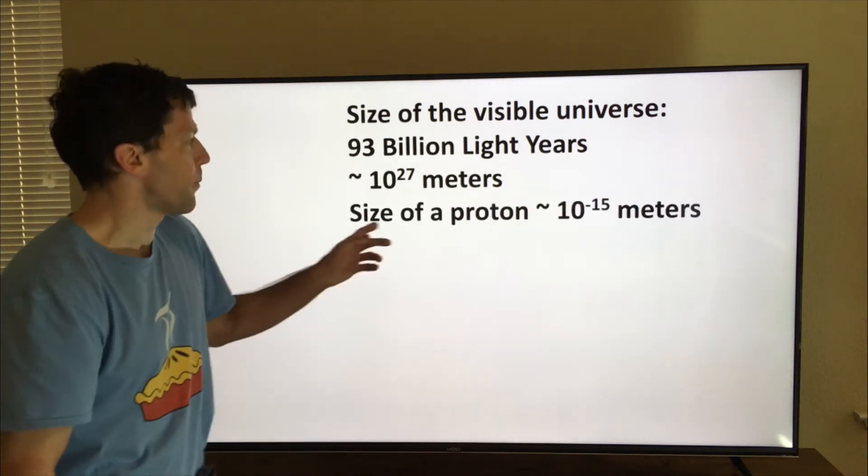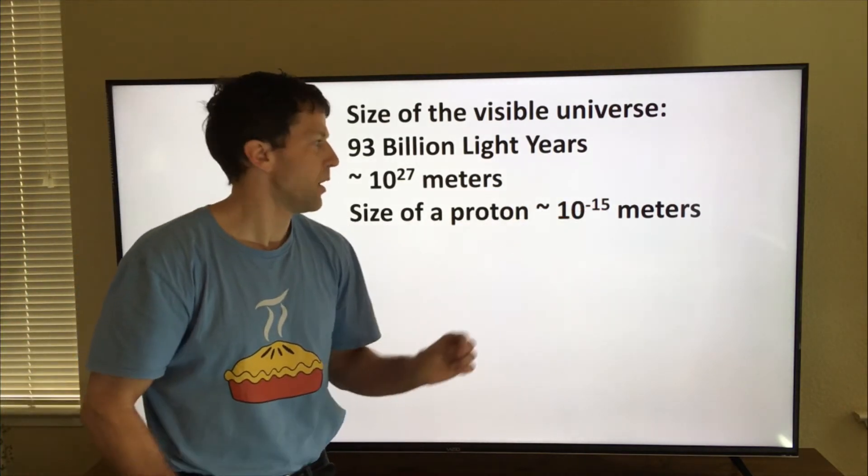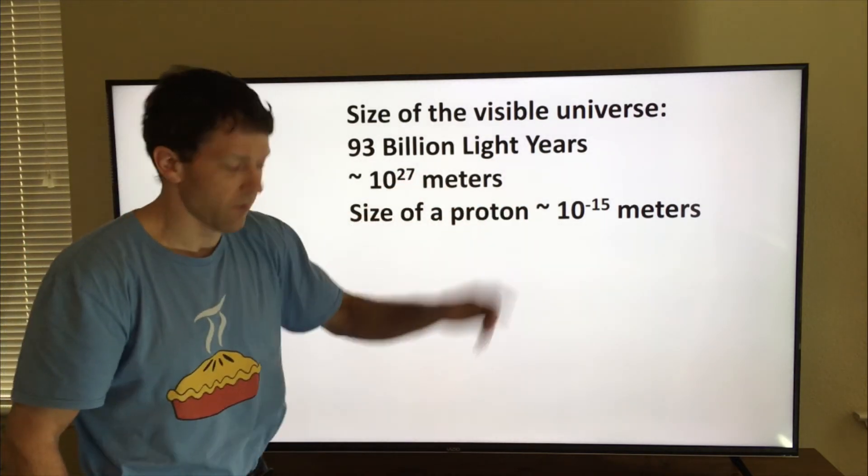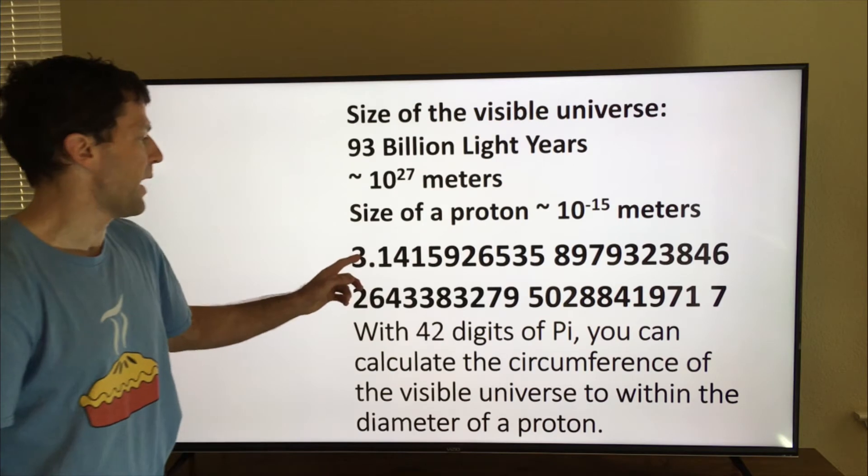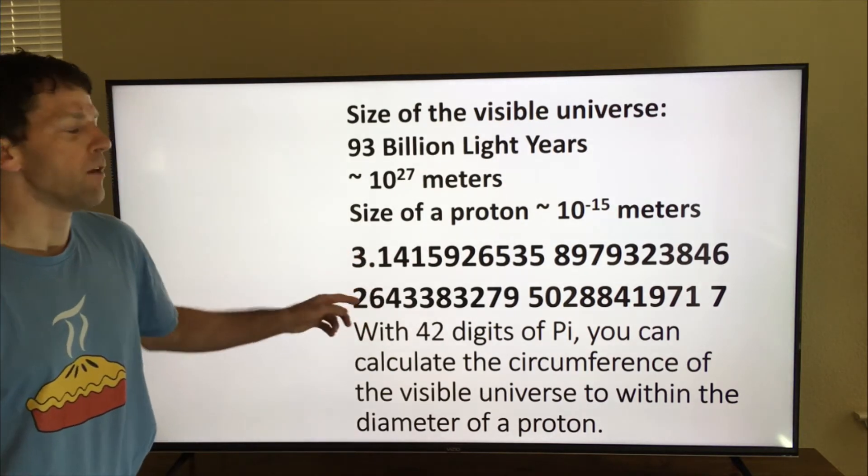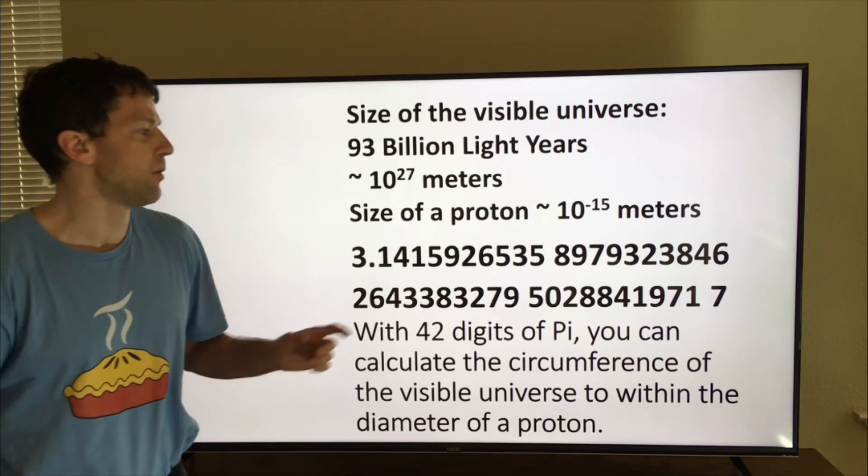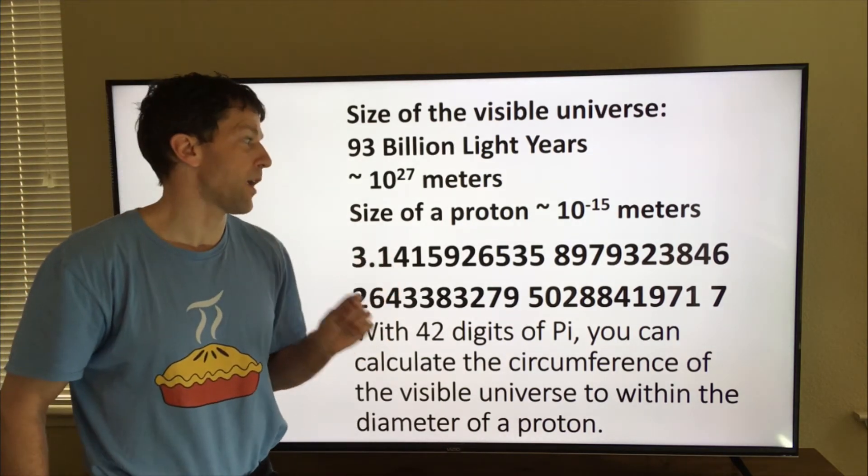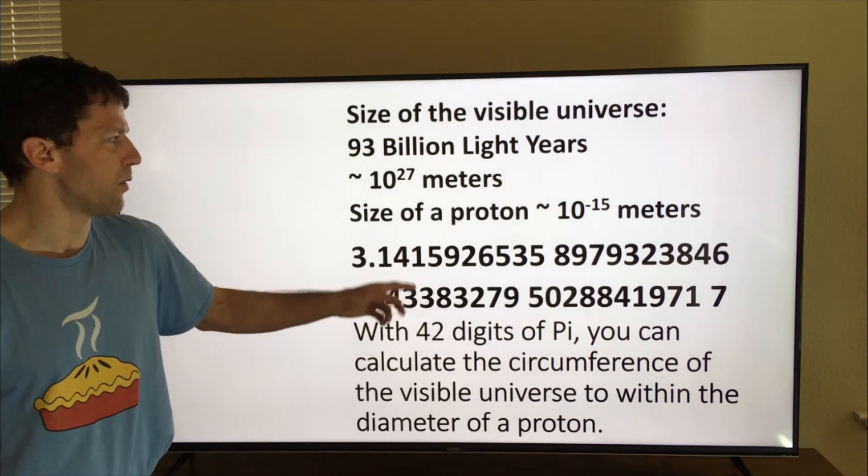So we need 15 more digits to resolve that. So 27 plus 15, if we had 42 digits of pi, which is just this right here, you can calculate the circumference of the visible universe to within the diameter of a proton. So for all practical purposes, you just need about 42 digits.